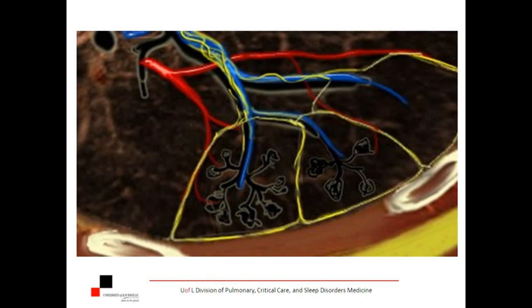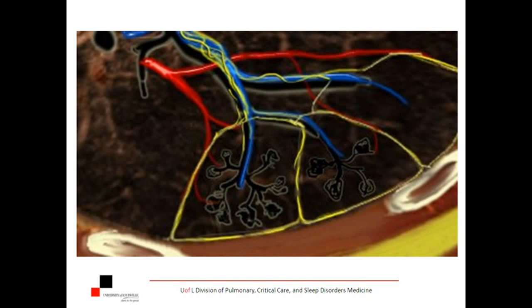The functional units here: you have a terminal bronchiole, which is the last of the conducting airways — no gas exchange happens in terminal bronchioles. Right beyond that you have the respiratory bronchioles, the alveolar ducts, then the alveolar sacs, and that's where gas exchange occurs. Running along with the terminal bronchiole is the pulmonary artery — the blue blood from the right heart — forming capillary plexuses around the alveoli. They pick up oxygen, turn red, and return via the pulmonary veins along the septa of the secondary lobules.